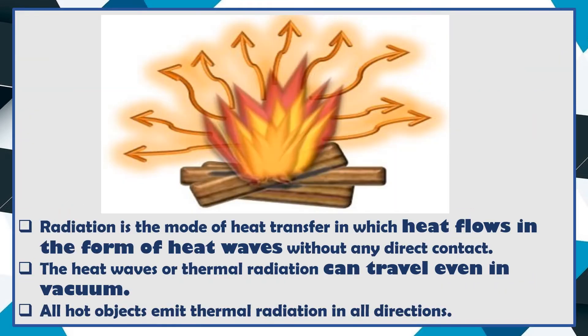In radiation, heat flows in the form of heat waves without any direct contact. The heat waves or thermal radiation can travel even in vacuum. All hot objects emit thermal radiation in all directions, as shown in the image above.